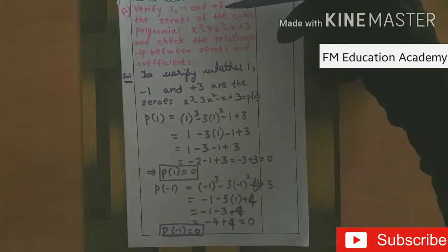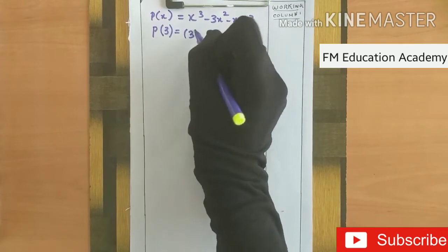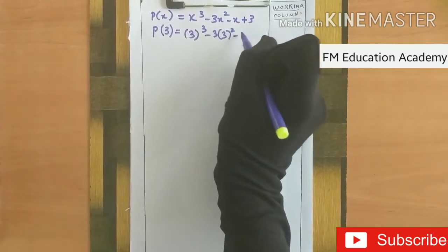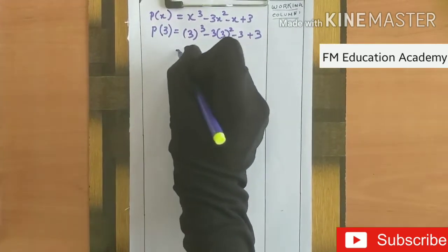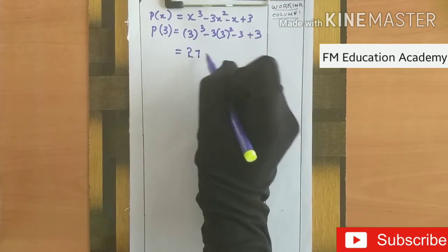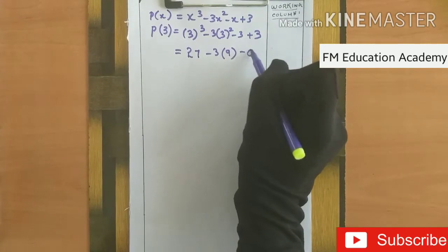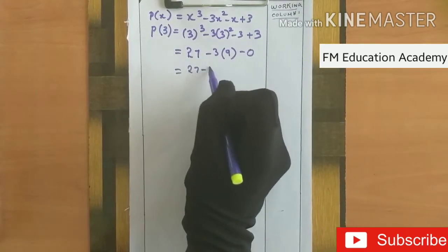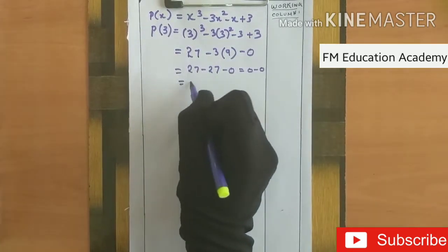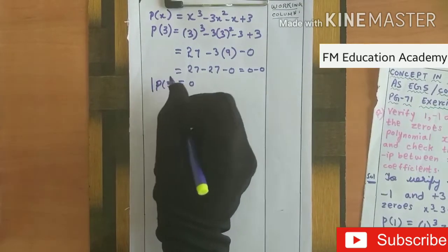Now let us find out whether substituting 3 gives 0 or not. p(3) equals 3³ minus 3 times 3² minus 3 plus 3. 3 cubed is 27. Minus 3 times 9 is minus 27. Minus 3 plus 3 is 0. So 27 minus 27 minus 0 equals 0. So p(3) is equal to 0.